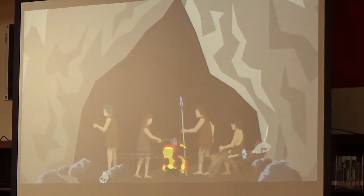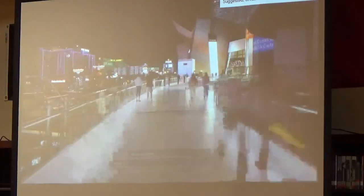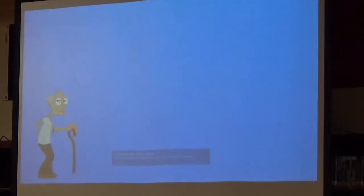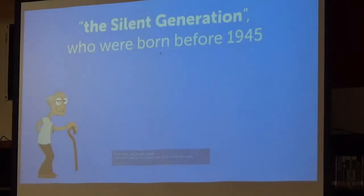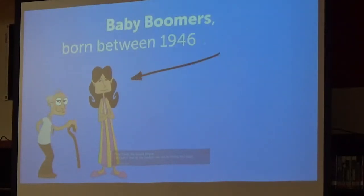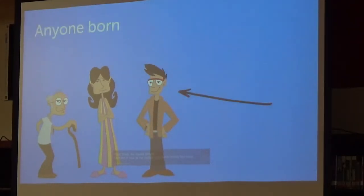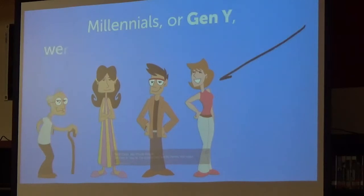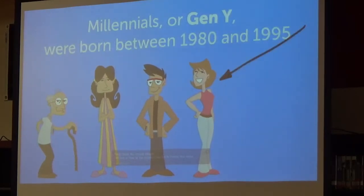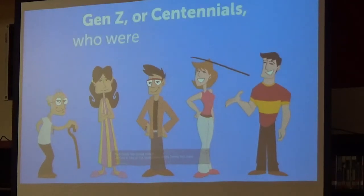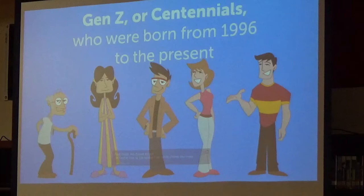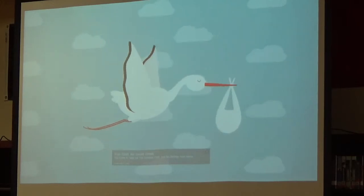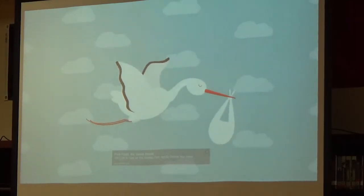People are categorized into generations depending on when they were born. There are five living generations: Traditionalists, also known as the Silent Generation, born before 1945; Baby Boomers, born between 1946 and 1964; Generation X, born between 1965 and 1979; Millennials, or Generation Y, born between 1980 and 1995; and Gen Z, or Centennials, born from 1996 to the present. These ranges are approximations — you can be born within three years of the start or end of a generation and still belong to it. What's more important is the collective experiences people born within these years share.